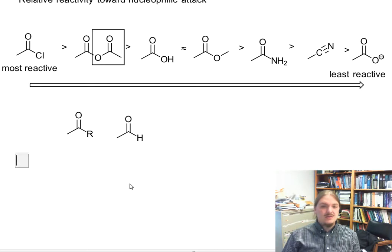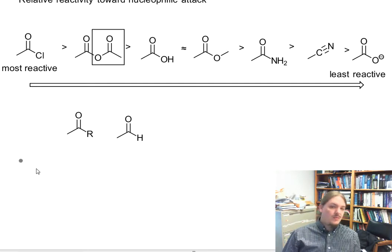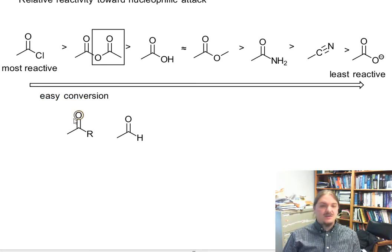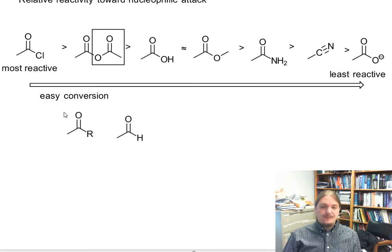We can use the property we talked about before in the context of interconversion, that conversions from more reactive carboxylic acid derivatives to less reactive ones are usually easier than the other way around. Things that are more reactive than aldehydes and ketones will be easy to convert into aldehydes and ketones, and things less reactive will be hard to convert.